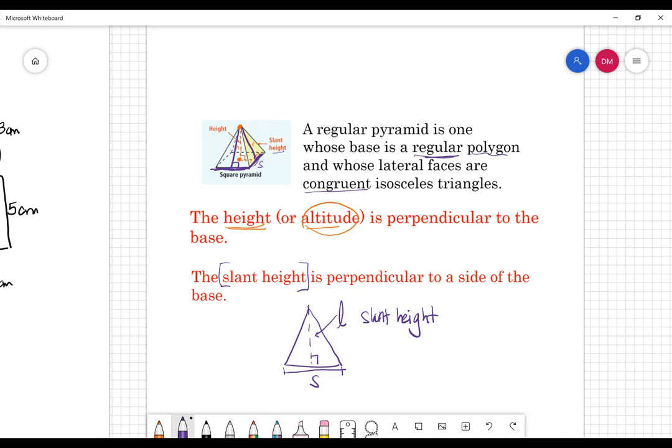That would be S right there. And the height of this triangle would be we use cursive L to represent slant height. And I think the reason why we use a cursive L there is because if we just used L, it would probably look like a one. Why do we use L to begin with? I am assuming, or maybe I heard this and now I just think it's a guess of mine. I don't know.